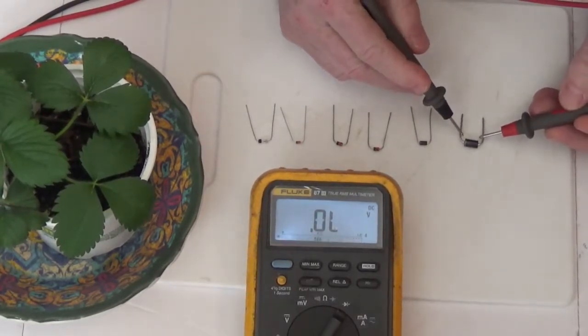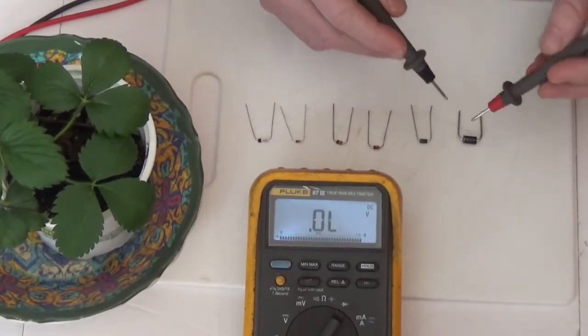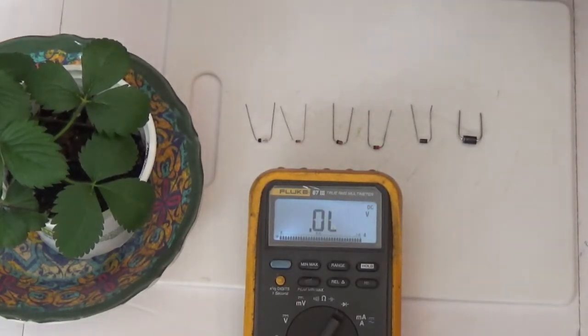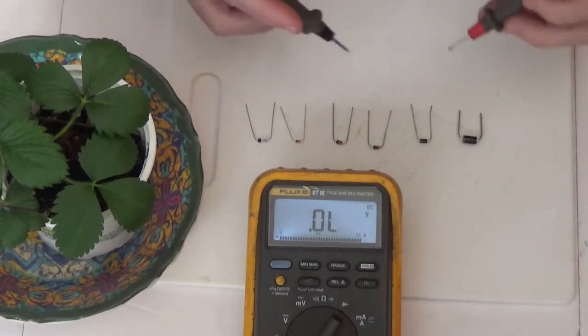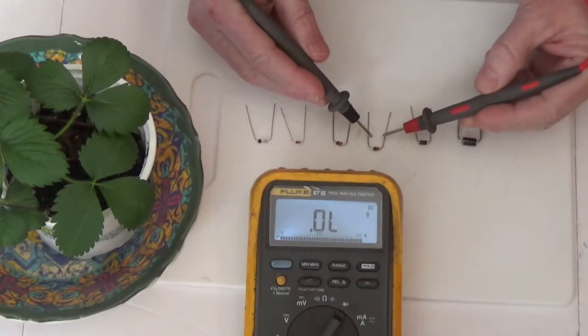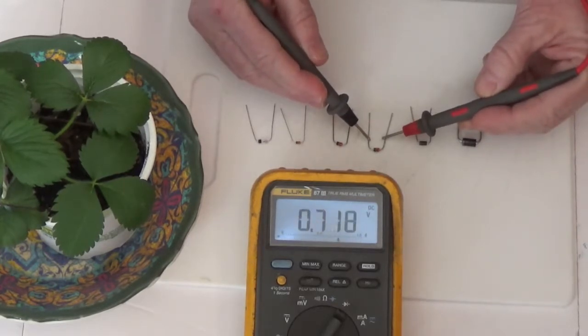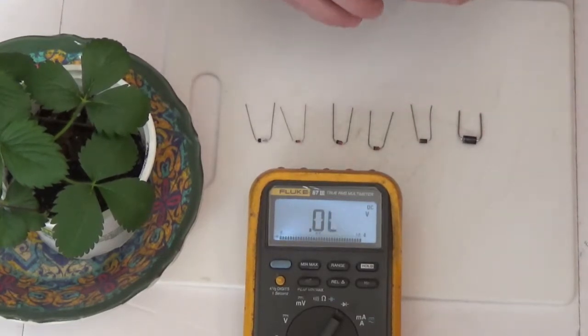All of these diodes have a purpose in their life in that circuit. If you think a diode is bad, take it out of the circuit. Put the black lead on the cathode, the red lead on the anode, and see if you have a good diode drop. Then reverse the leads, and you will not have a diode drop normally.